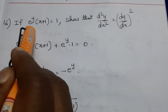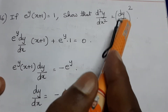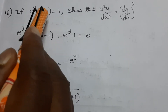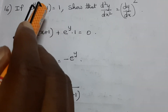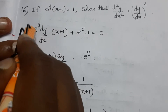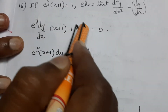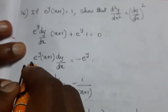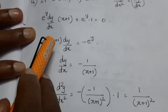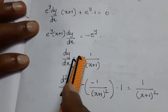Problem 16: if e^y times (x+1) equals 1, show that d²y/dx² equals (dy/dx)². Using the uv formula, differentiate e^y times (x+1). This gives dy/dx equals minus 1 divided by (x+1).